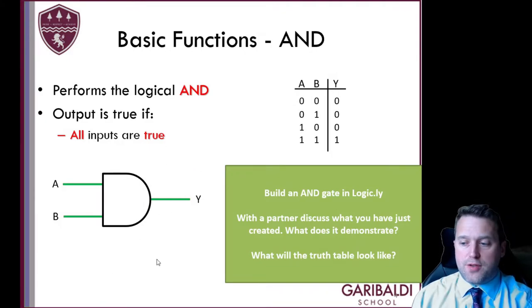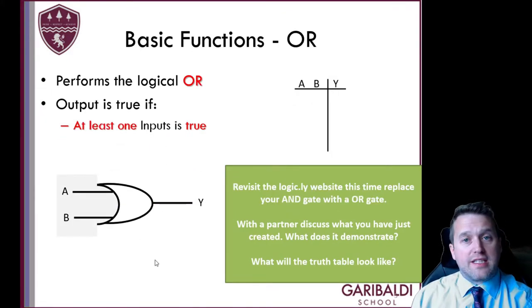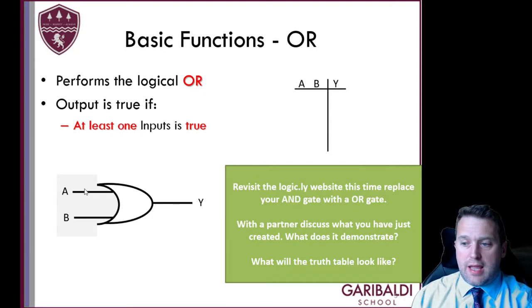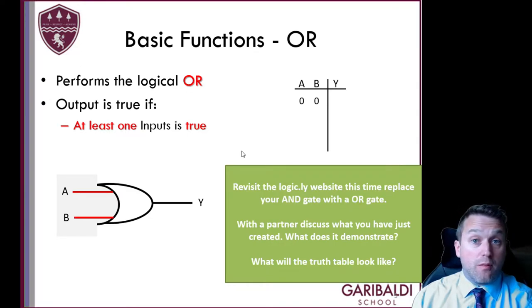Our next gate is called OR. Now the OR gate behaves a little bit differently. It will trigger if any of its inputs are on. So here in the example, if I have both of them off, this is the time the OR gate is still off. If I have one of them on, it is on. If the other comes on, it is on.